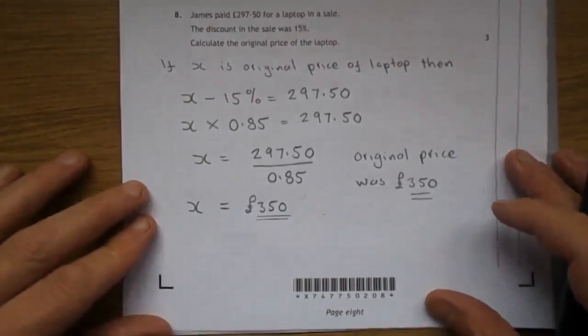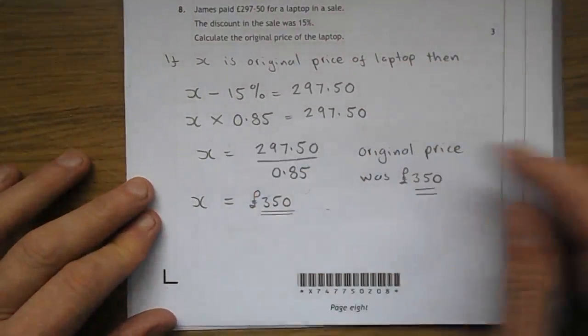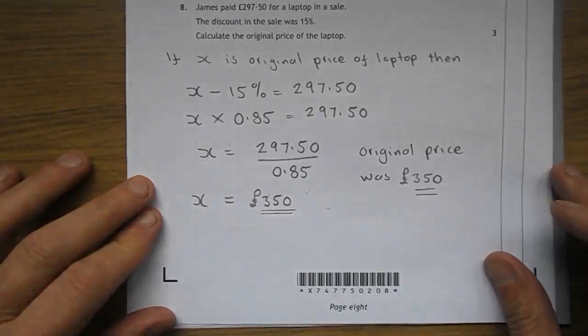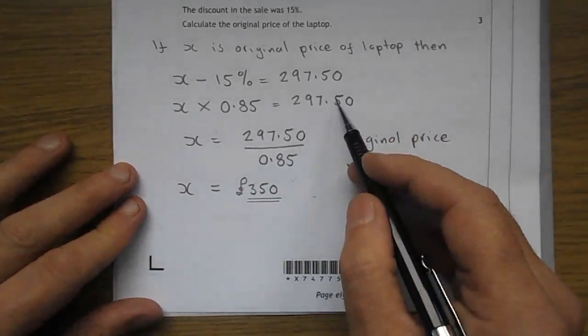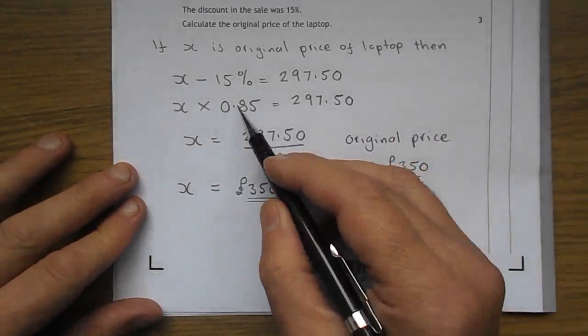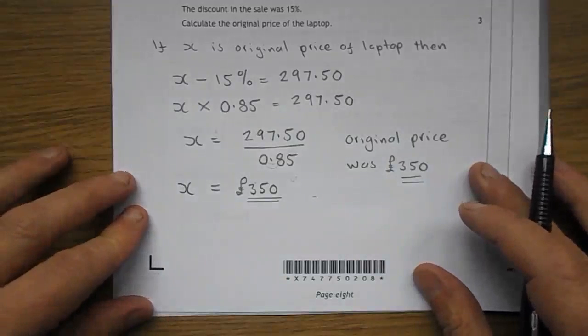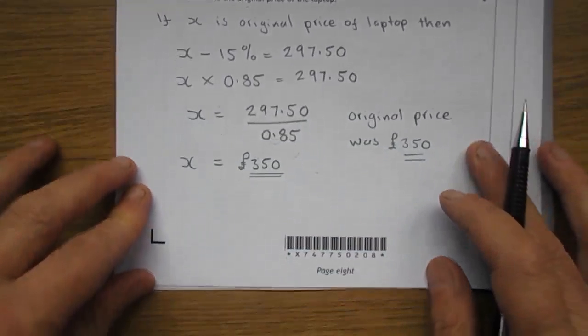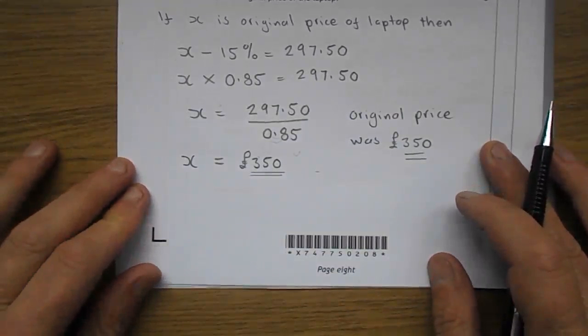How do you take away 15%? You think of 100, take 15, 85, times it by 0.85. So it's X times 0.85 equals £297.50, so you divide that by that, there it is there, to get X the original price and you get £350. So the original price, £350.